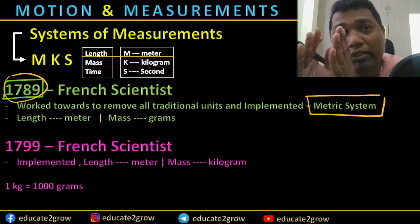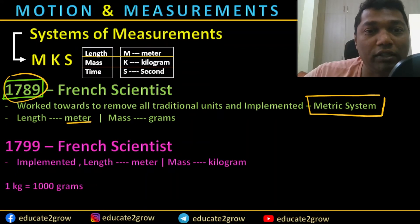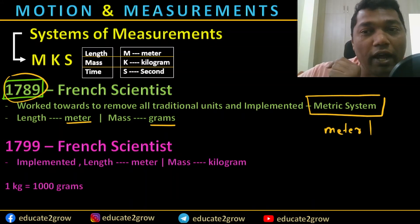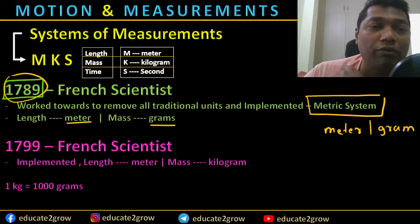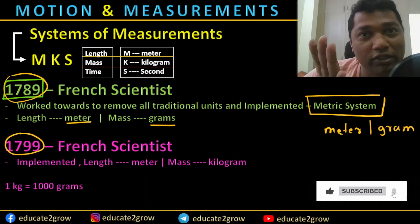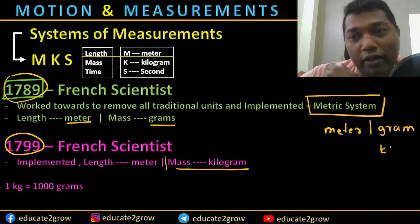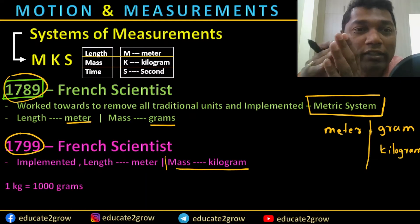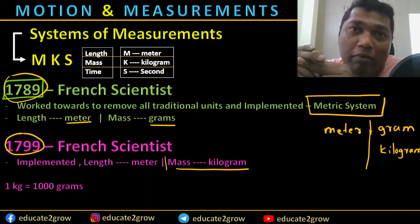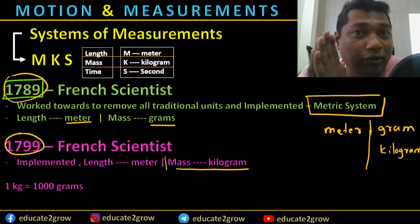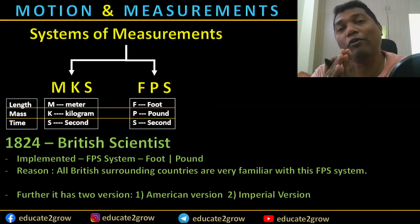During that time, in 1789, they selected from the traditional units: length as meter and mass as grams. So meter and gram were identified as two units. The study continued, and in 1799 the French scientific community further implemented kilogram for mass. By 1799, these three units were implemented for length and mass, along with the conversion factor: one kilogram equals 1000 grams.